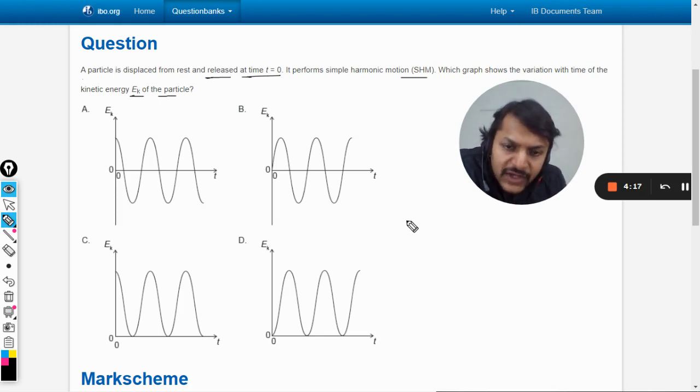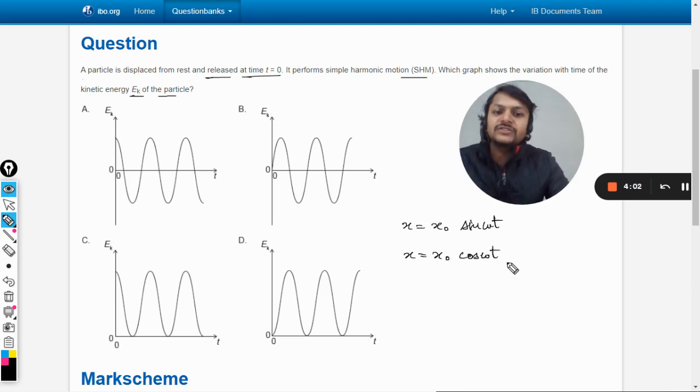Whenever we're talking about simple harmonic motion, there are two ways in which displacement can be taken: x equals x naught sine omega t, and x equals x naught cosine omega t. To answer this question, we must understand what displacement function we're going to use, because according to that, the function of kinetic energy will also change.